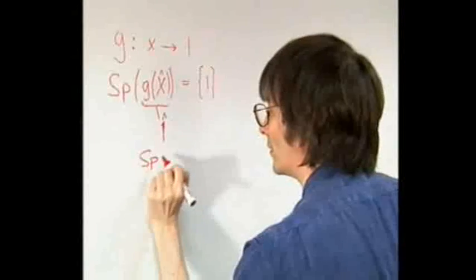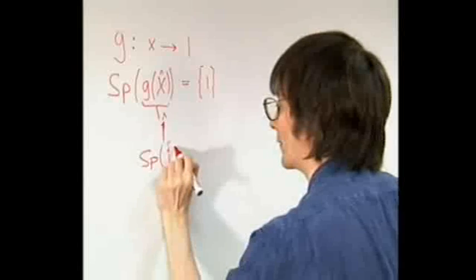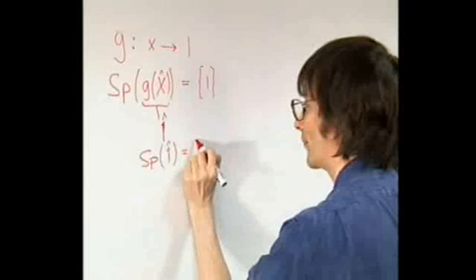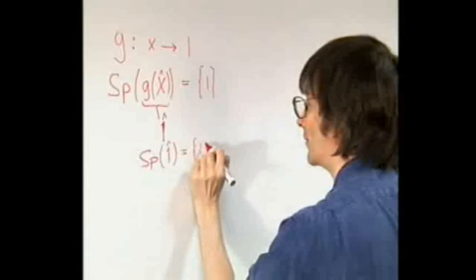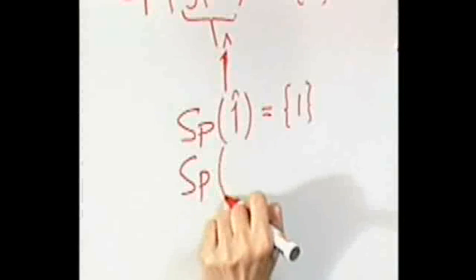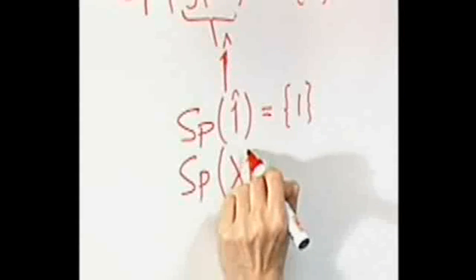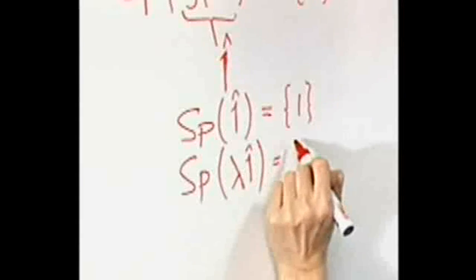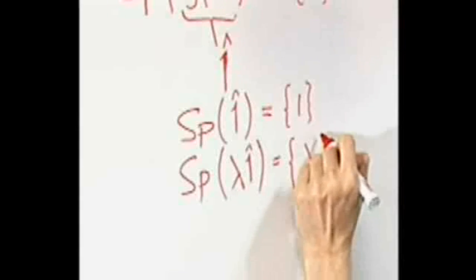Spectrum of 1 hat equals the set containing 1. Similarly, lambda times the unit observable, where lambda is any real number, must be another trivial observable, the one where the only possible outcome of measuring it is lambda.